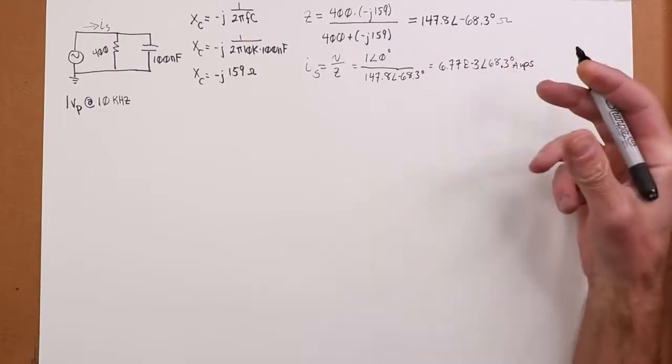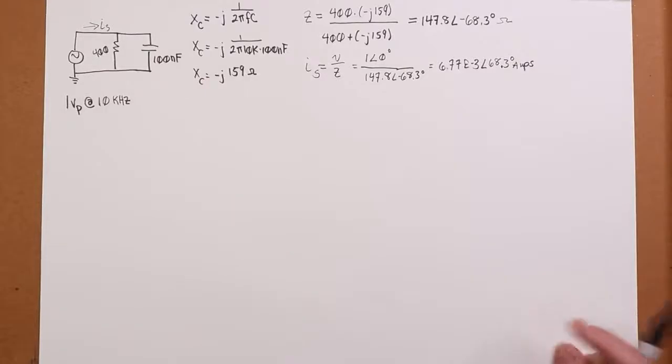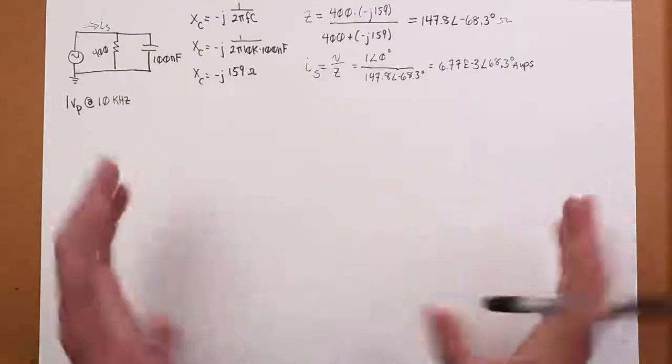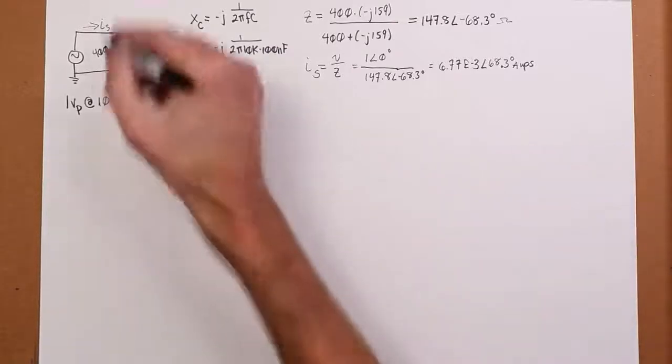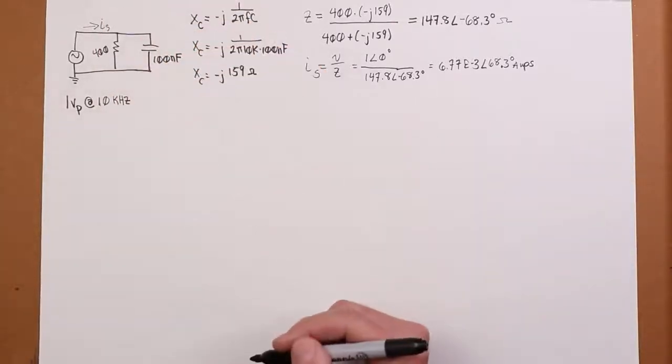And as I said, we could do a current divider on this now to find the two pieces. But just to look at this two different ways, let's use Ohm's law to find the two branch currents. We could get IR and IC.